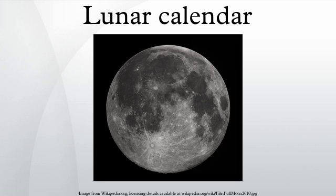A lunar calendar is a calendar that is based on cycles of the lunar phases. Because there are slightly more than twelve lunations in a solar year, the period of twelve lunar months is sometimes referred to as a lunar year. A common purely lunar calendar is the Islamic calendar. A feature of the Islamic calendar is that a year is always twelve months, so the months are not linked with the seasons and drift each solar year by eleven to twelve days. It comes back to the position it had in relation to the solar year approximately every thirty-three Islamic years.